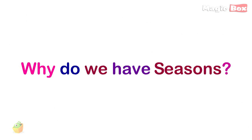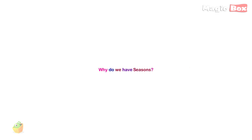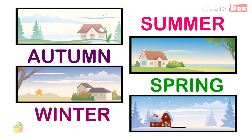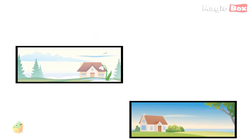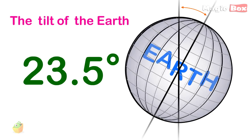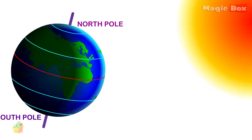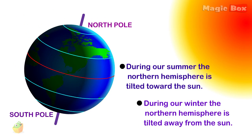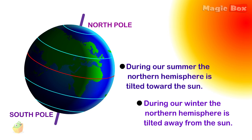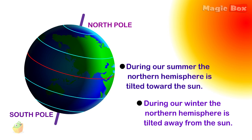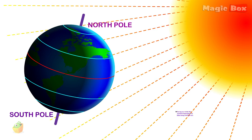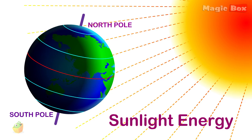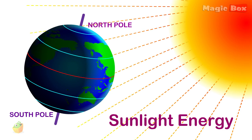Why do we have seasons? The reason why Earth has different weather for different seasons is due to the tilt of the Earth. During our summer, the Northern Hemisphere is tilted toward the Sun. During our winter, the Northern Hemisphere is tilted away from the Sun. This tilt causes a difference in the amount of sunlight energy we receive.